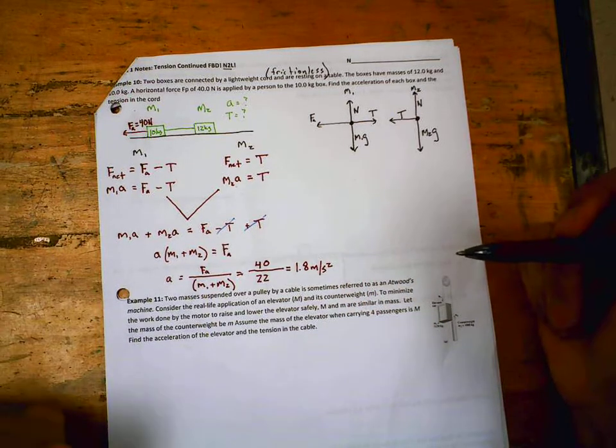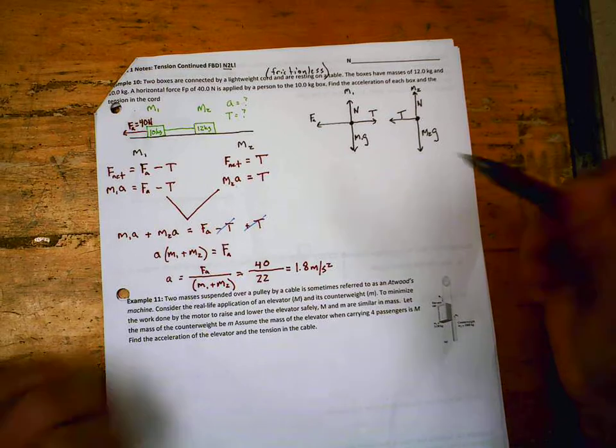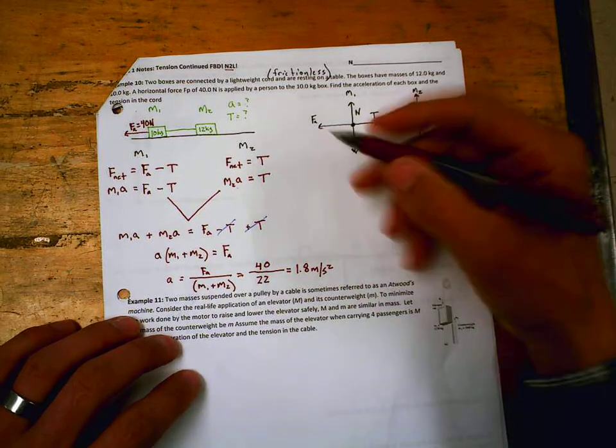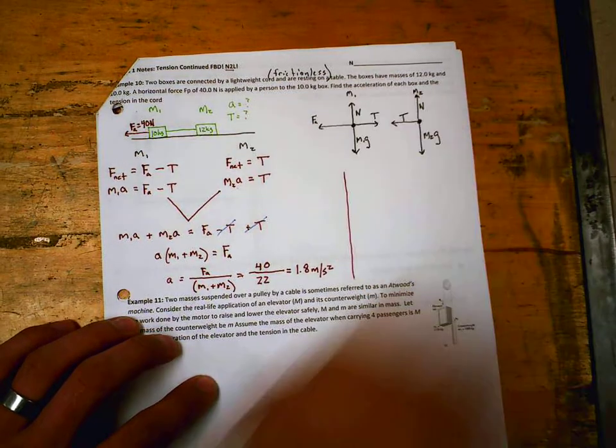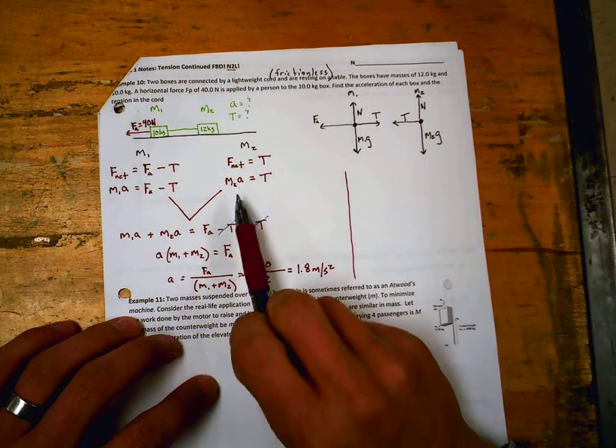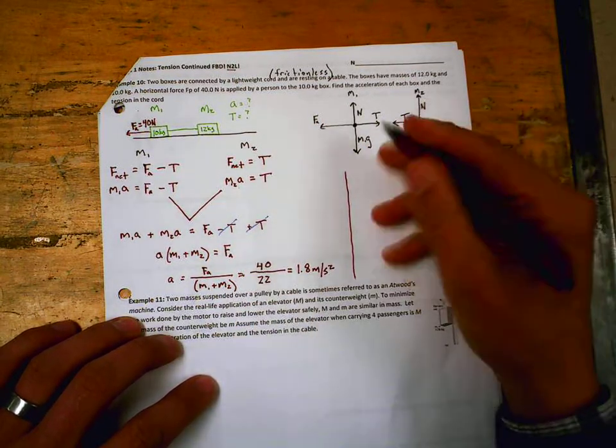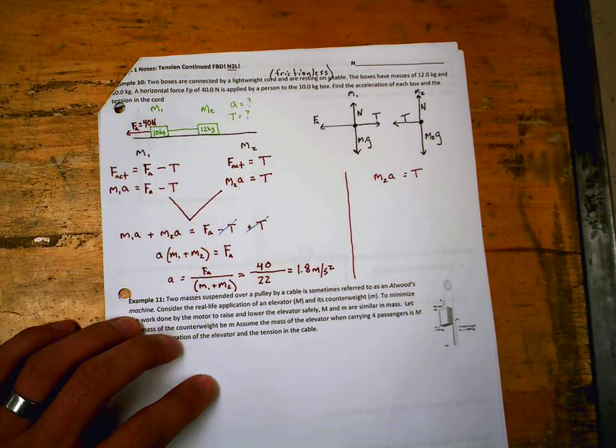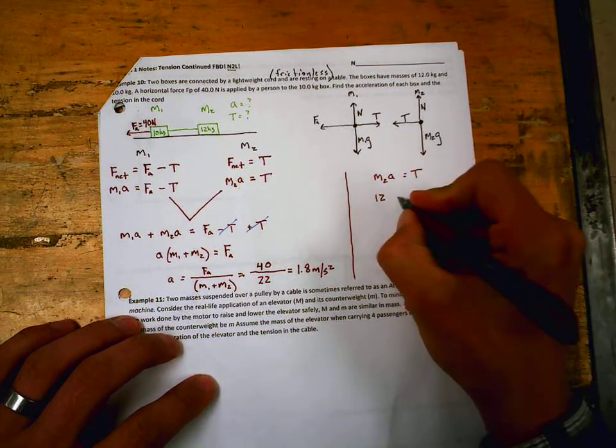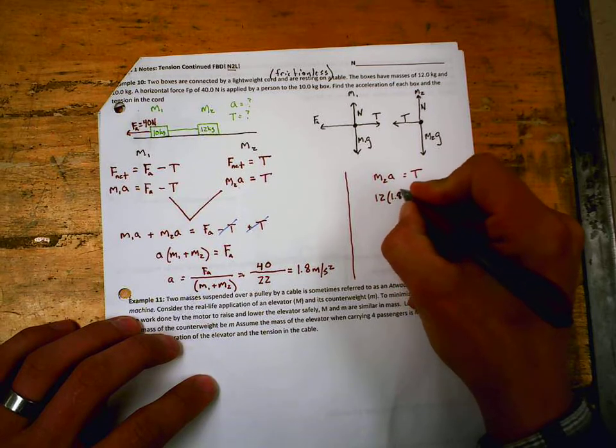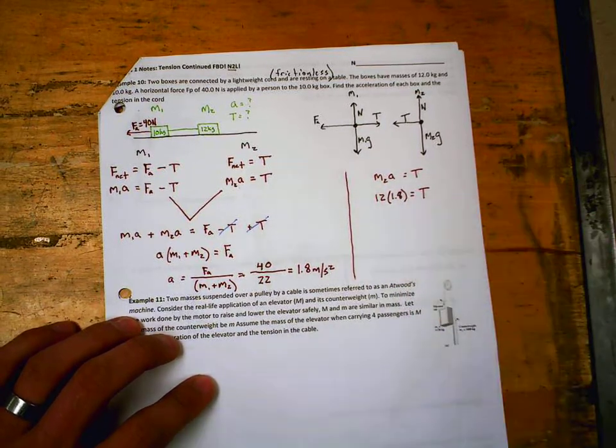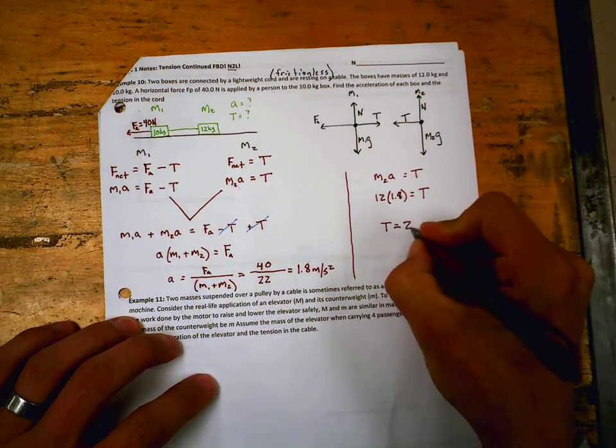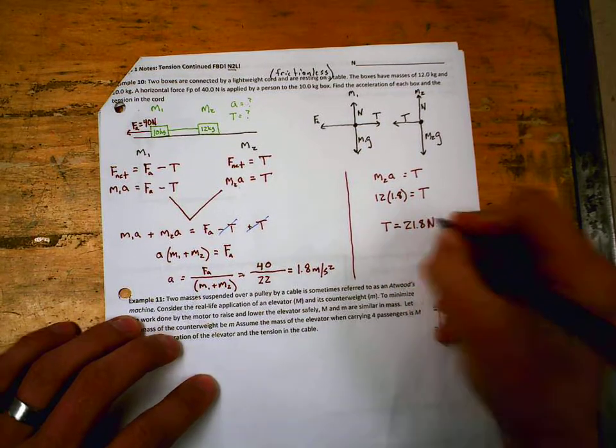So we're going to need one of these equations. Now which equation should we use? I like the M2A equals T, how about that easy one? Now the only thing hard is make sure you use the right mass. So we're going to say for tension, M2A equals T. So 12 times 1.8 equals T, and we get a tension equal to 21.8 Newtons. Any questions?